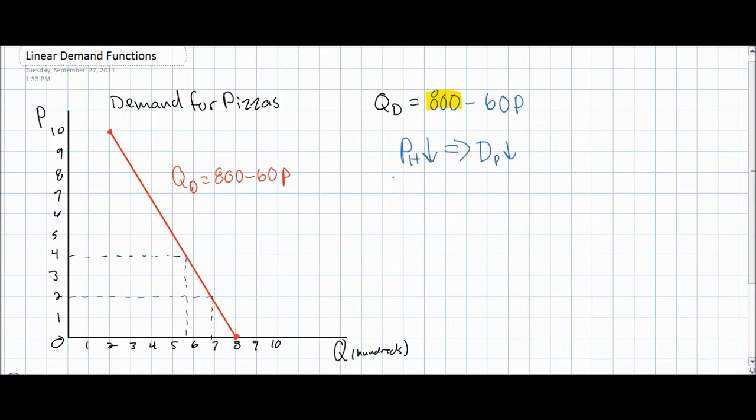A decrease in the price of hamburgers causes the demand for pizzas to fall, since the substitute good is now cheaper and more attractive to consumers. In our demand equation, this is illustrated simply as a decrease in the A variable, which originally was 800 in our original demand equation. Let's assume that a fall in the price of hamburgers changes our demand for pizzas from QD equals 800 minus 60P to QD equals 600 minus 60P.